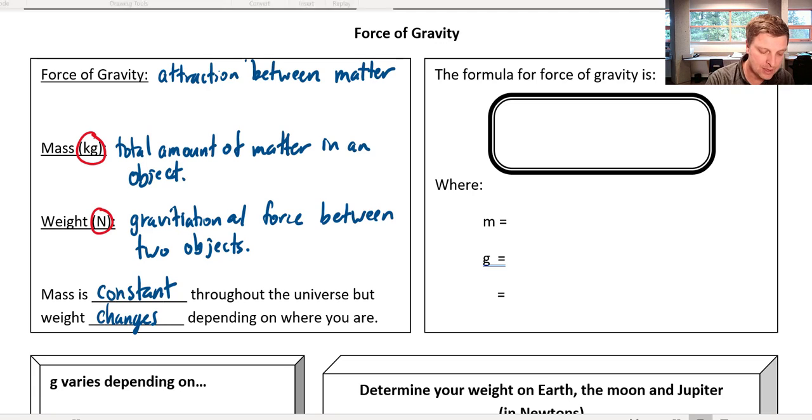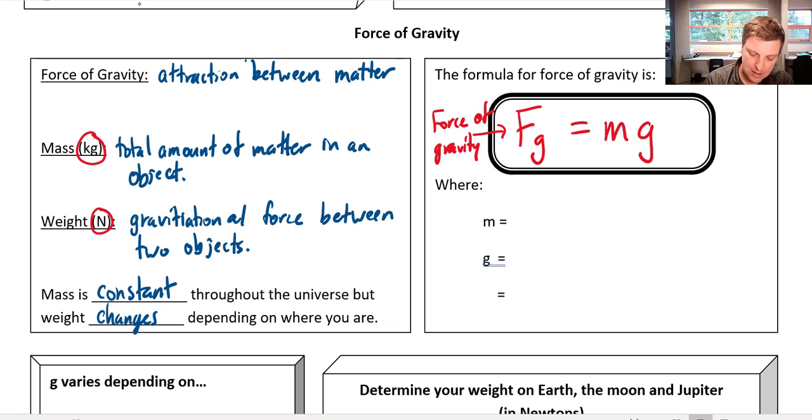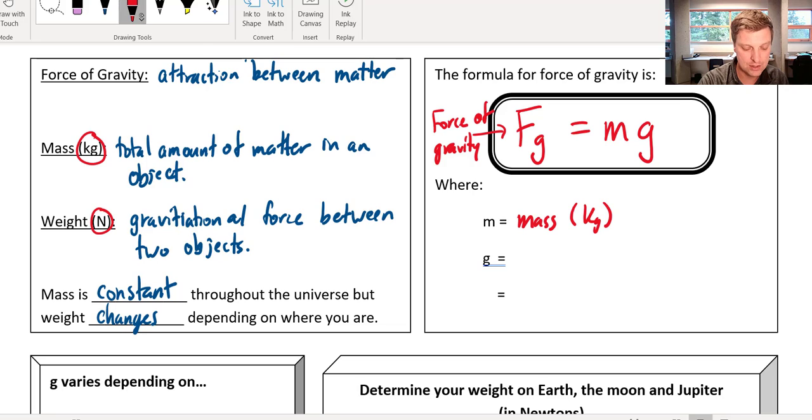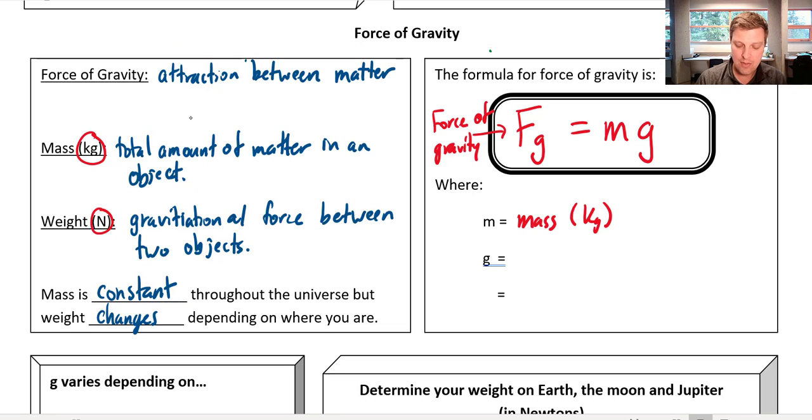And so we have a formula here to calculate the force of gravity. So here's our first force formula. Fg, which is just force of gravity, is going to equal M times g. And so M we can imagine, well this is force of gravity. M is mass and we're gonna always measure that in physics in kilograms compared to say chemistry where you might measure something in grams.